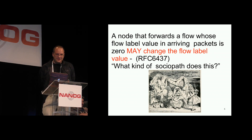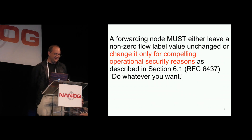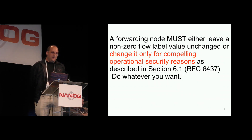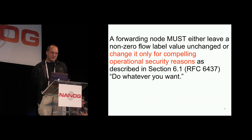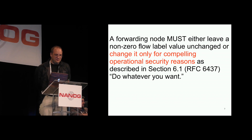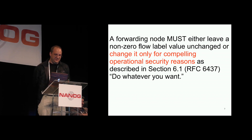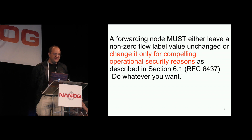May? What kind of sociopath changes the flow label of packets in flight? Well, it turns out it's us. We also said a forwarding node must either leave a non-zero flow label value unchanged or change it only for compelling operational security reasons. So that basically gives you a license to do whatever you want.